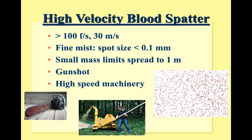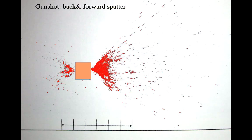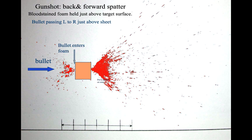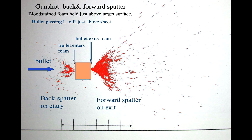There are a couple of special vocabulary words for gunshot blood spatter. Blood that comes back toward the shooter is called back spatter. Blood that goes out of the exit wound — if there is one — and travels forward in the same direction as the bullet is called forward spatter.